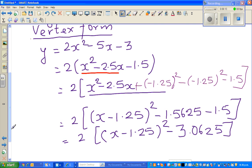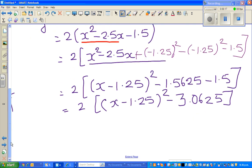So this is equal to, I'm going to expand and bring back this 2. When you bring back this 2, two times this will be 2 times x minus 1.25 squared. I'm going to multiply 2 with 3.0625, that will give me minus 6.125. How did I know that? 2 times negative 3.0625 is 6.125.